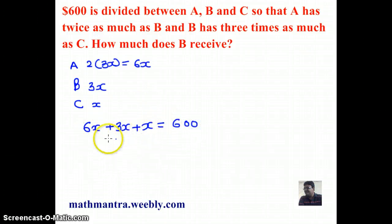And if you add all these here together, you get 10X as 600 or dividing by 10 on both sides, you get X as 60.